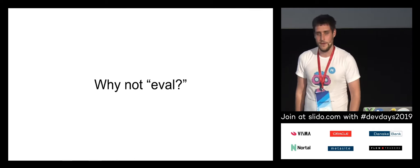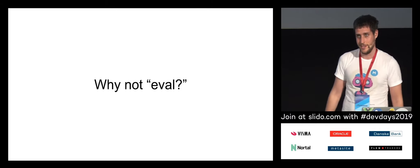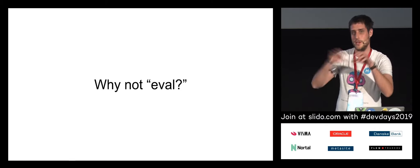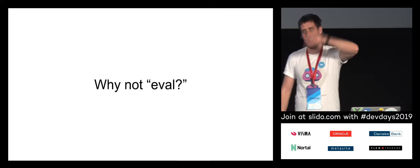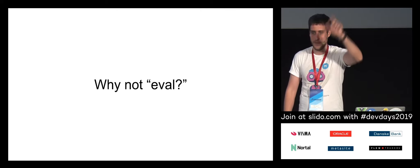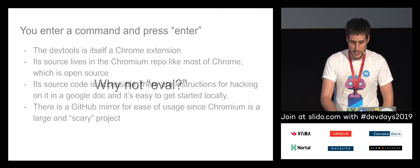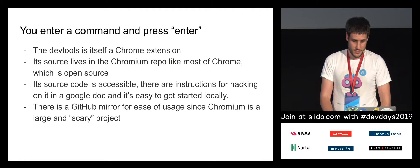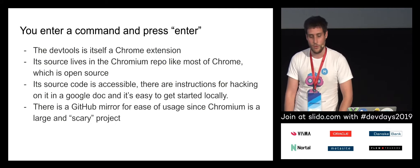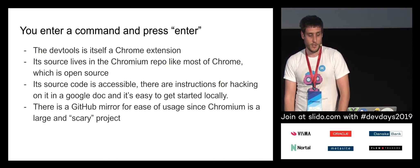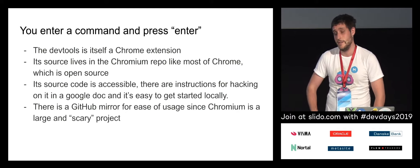The reason we can't use eval is because of scoping. You need to run the code in a specific frame, and eval has limitations — for example, if you move to a different iframe and need to do stuff across frames. And like we said, the DevTools has superpowers. It's a Chrome extension that lives in the Chromium repo, and the source code is accessible. There are actually instructions for hacking on it in the repo.